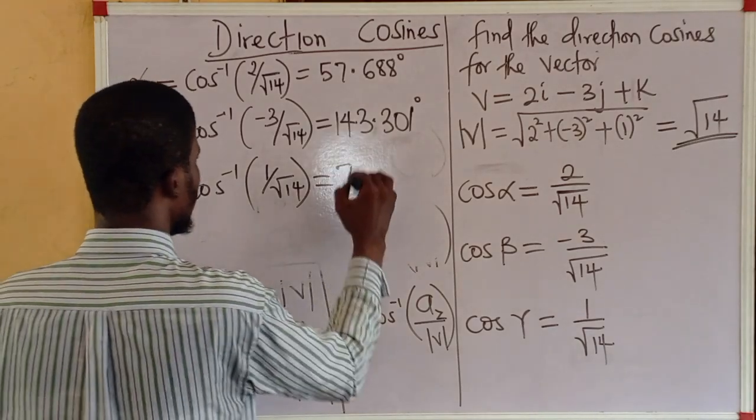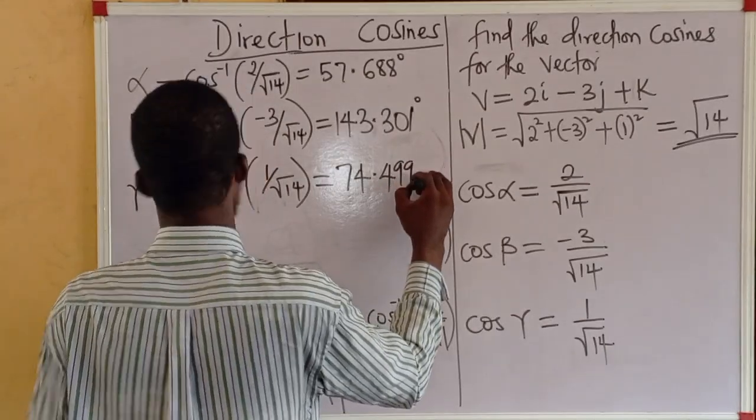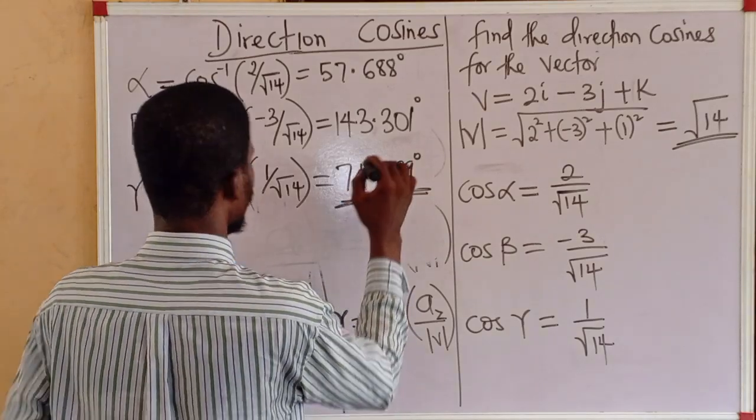That's 74.499 degrees to 3 decimal places.